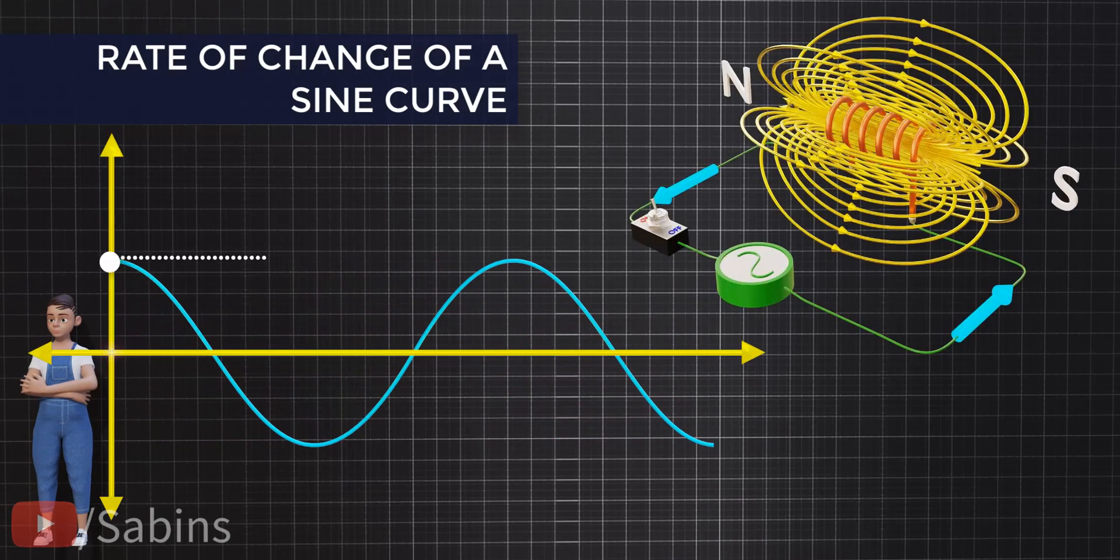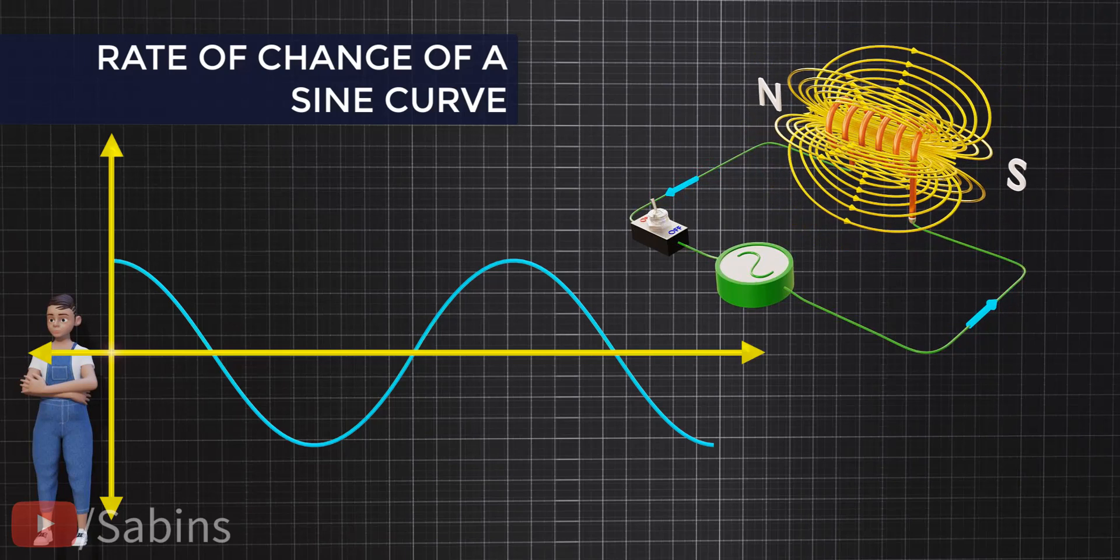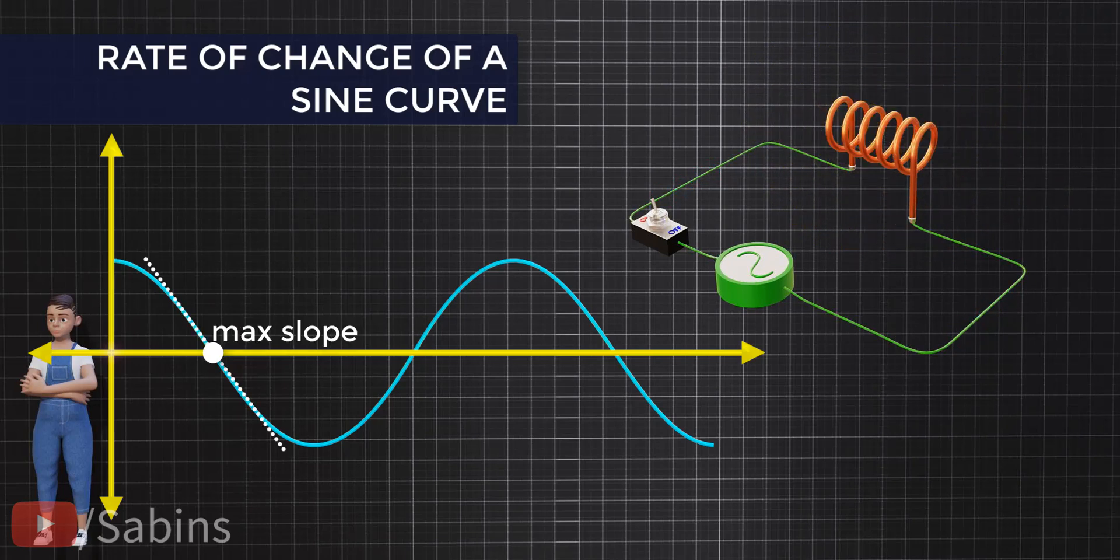Clearly, for the sine curve, the change is zero when the current is at the peak, and the change is maximal when the current is zero. This is one interesting property of a sine curve.